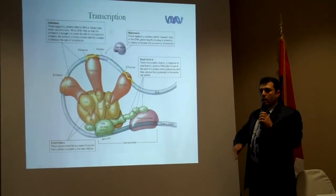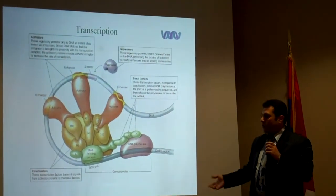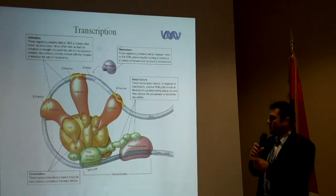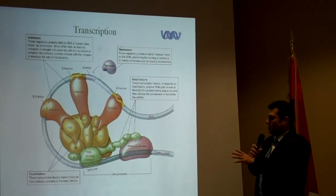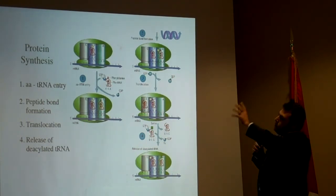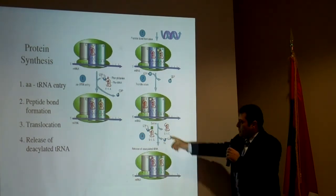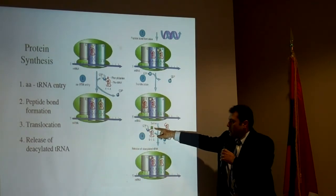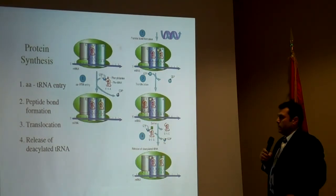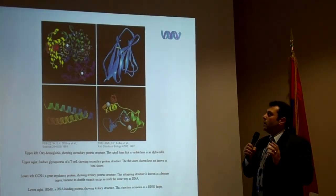Each one of these transcription factors, if mutated, can uncontrollably start transcribing DNA — which is called cancer, though that is not today's topic. After transcription, the mRNA goes through a ribosome — shown as two green circles — and is translated into protein. Transfer RNAs bring amino acids, which bind to the ribosome and to each other, creating a protein chain.